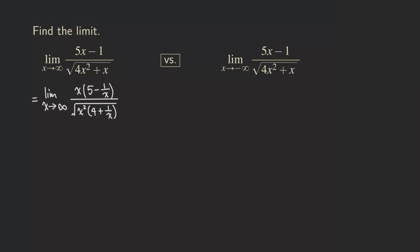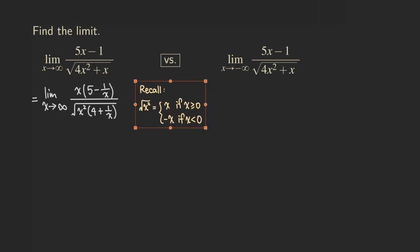Let's recall that if you have x squared inside the square root, simplifying that is not just x. You have to be careful — it depends on the sign of x. We get two situations: the square root of x squared equals x when x is positive or zero, but on the other hand, we get negative x if x is less than zero.